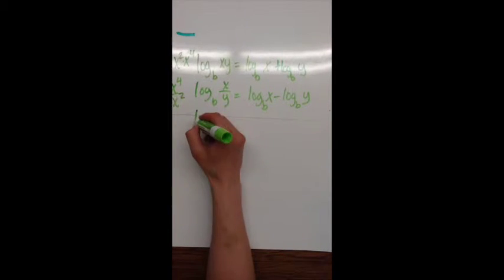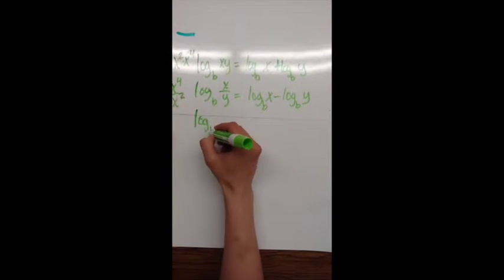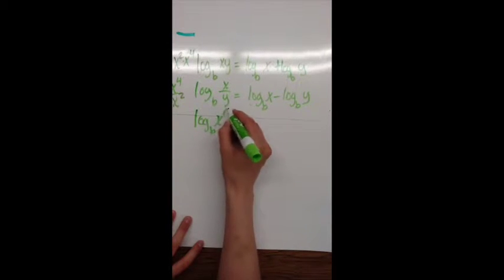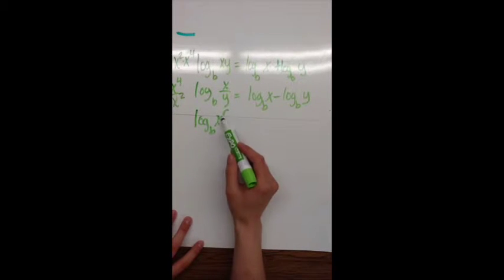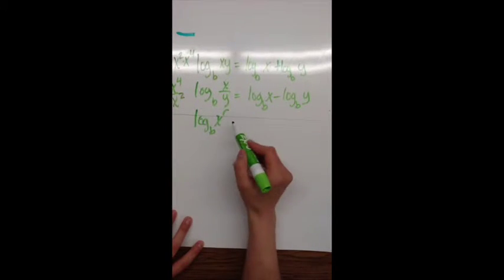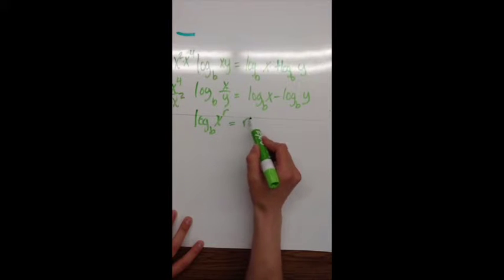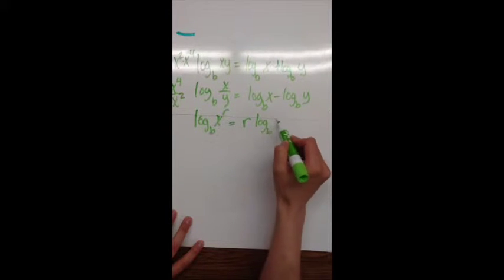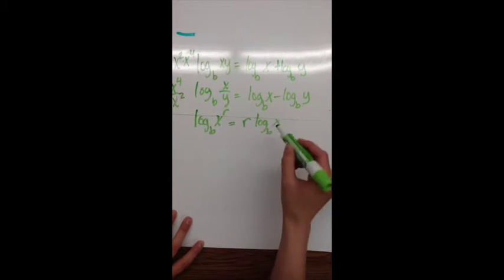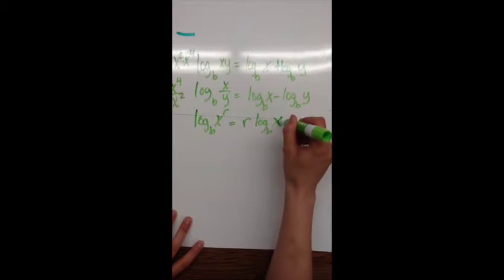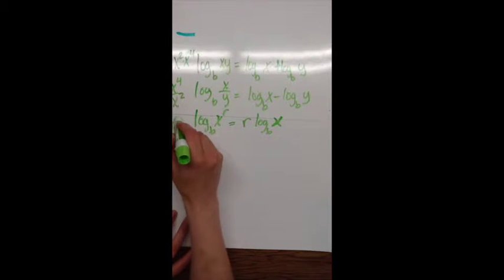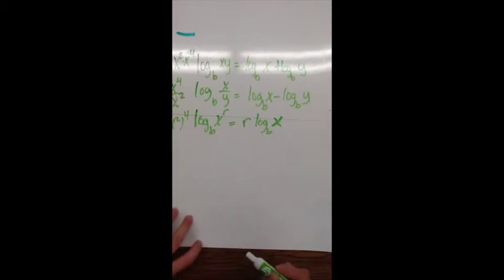Our last rule has to do with having a power. If I have log base b of x to the r, what I can do is multiply the r out in front, so I get r times log base b of x. This is similar to if I had x squared to the fourth — we end up multiplying the 2 and the 4.